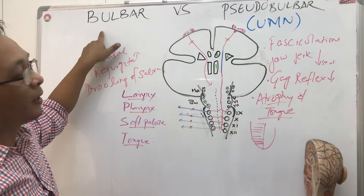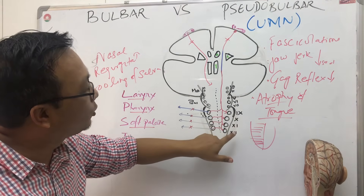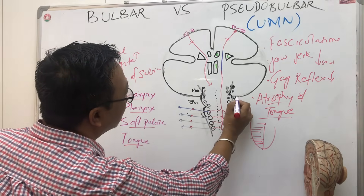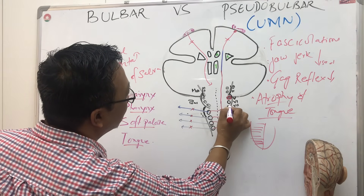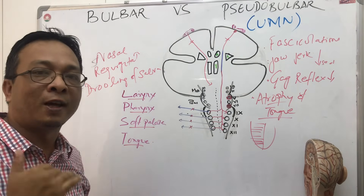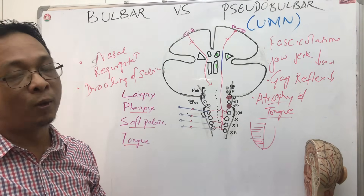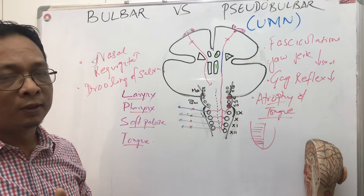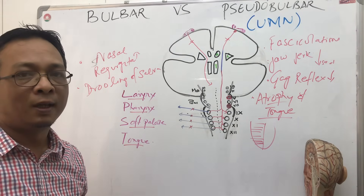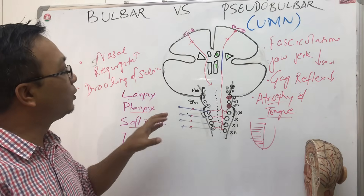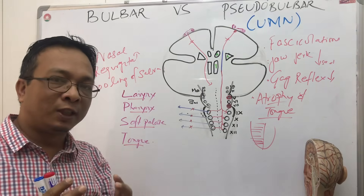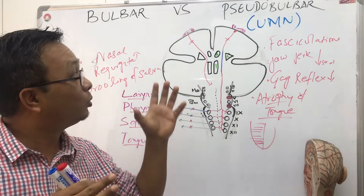In contrast to bulbar palsy where nine, ten, eleven, twelve are involved, in pseudobulbar palsy cranial nerves five and seven are also involved. Cranial nerve five, the trigeminal nerve, is involved with swallowing and chewing, as it supplies the muscles of mastication. Cranial nerve seven is the facial nerve, and so facial paralysis is combined — making pseudobulbar palsy a bigger scenario.